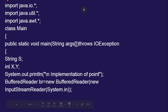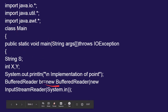So we start with import java.io.*, which is for input/output. Then import java.util, which is for the utility classes we are using. And then import java.awt. Then we have class Main with public static void main, String args throws IOException.